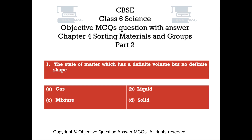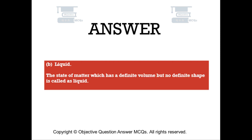Question number 1. The state of matter which has a definite volume but no definite shape. Option A: Gas. Option B: Liquid. Option C: Mixture. Option D: Solid. The right answer is Option B — Liquid. The state of matter which has a definite volume but no definite shape is called liquid.